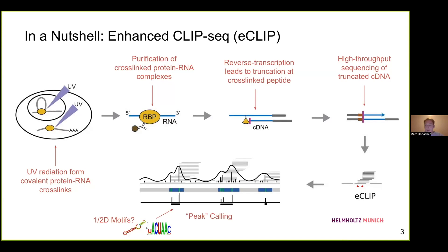One then performs high-throughput sequencing on these cDNAs and maps the reads to the reference genome. One can observe very characteristic pileups of read starts, which then serve as an experimental signal for downstream analysis — most commonly peak-calling, which involves identifying sites where cross-link events are enriched, labeled as binding sites of the protein. These proteins don't just bind randomly; they usually have specificity to specific sequence or higher-order structural motifs.